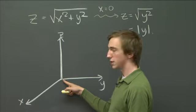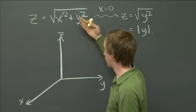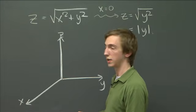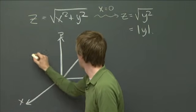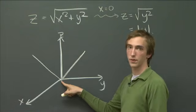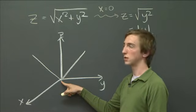So what that means is that whatever this surface looks like, we know what it looks like if we slice it in the blackboard, in the plane of the blackboard. We know that it just looks like this is just the graph of the function absolute value of y, z equals absolute value of y.